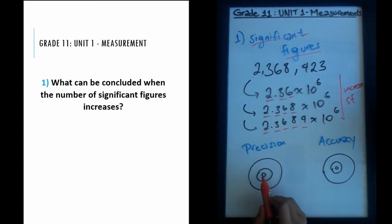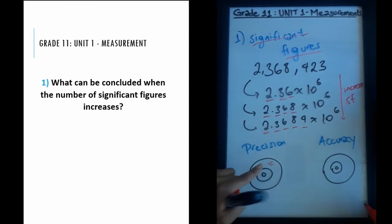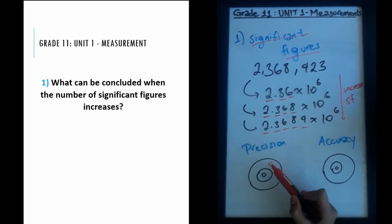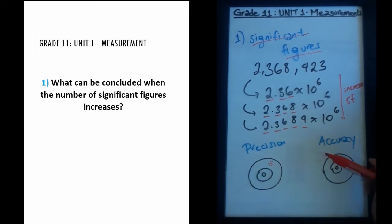To say a measurement is precise, it means it's exact. It's exactness not in the sense that it's close to the center, but every time you shoot your arrow, you shoot them very close together. Or every time you make your measurements, your measurements are close together, not necessarily close to the true value.